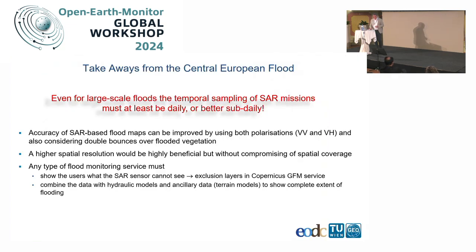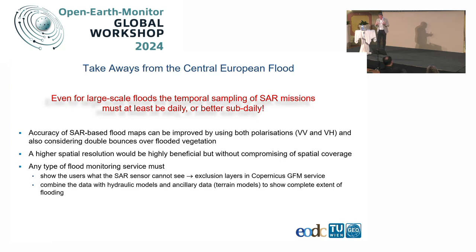My takeaways from this flooding event: even for large-scale floods in real situations we need much better temporal sampling. We need sub-daily coverage. We also need to use all available information — at the moment we use only the VV polarization of Sentinel-1, so we should also use the VH information. Higher spatial resolution would be good for very local effects, but I would not compromise on spatial coverage. Users must always know what they're getting.